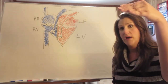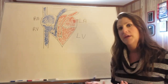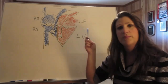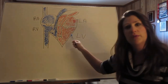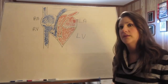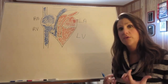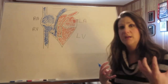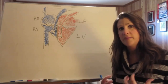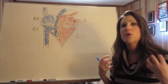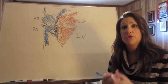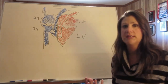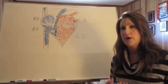The four valves are: tricuspid, pulmonic, mitral, and aortic. The mitral valve and aortic valve have to be strong to keep up with the high pressure of the powerful left ventricle. They are also the valves that we see the most problems with.